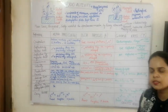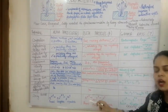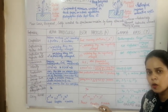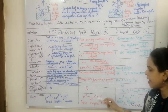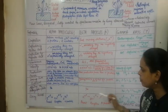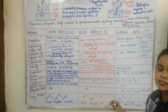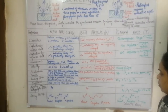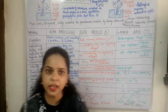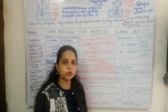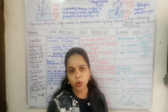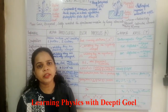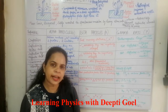In beta decay, the parent nucleus undergoes disintegration to form a daughter nucleus where the atomic number is increased by 1, the mass number remains the same, and fast-moving negatively charged electrons are emitted. The third type, gamma rays, are produced when the parent nucleus in an excited state comes down to the lower ground state, emitting electromagnetic rays.